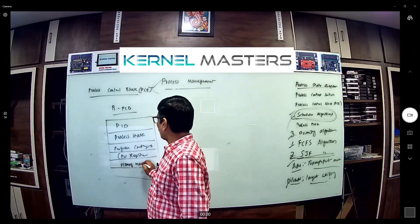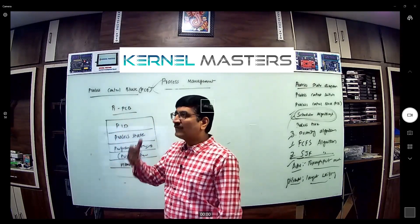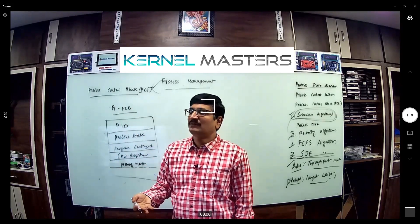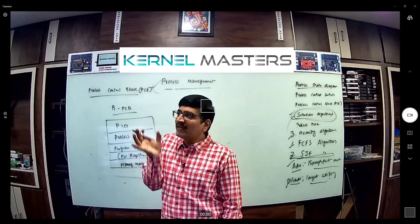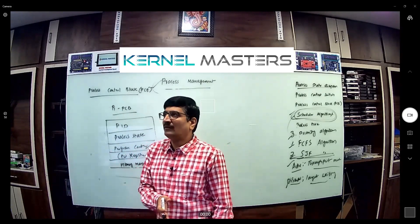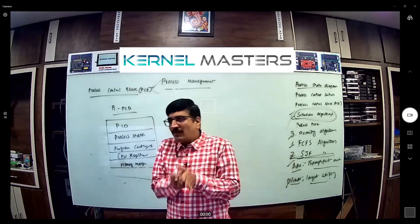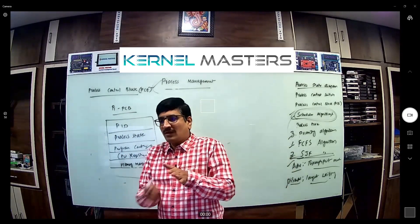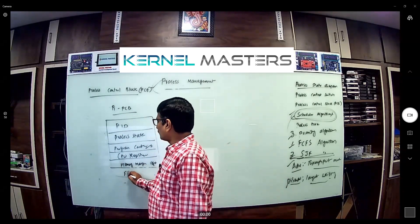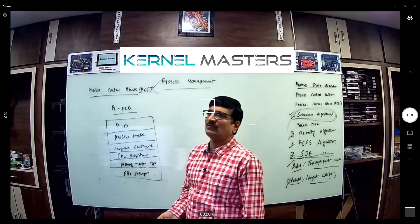Memory management information — how many pages are available, which pages are available, how many pages are being allocated. With demand paging, only the required pages are allocated; other pages are not allocated. So some memory points to the hard disk, some memory points to primary memory. All these things are decided by memory management.